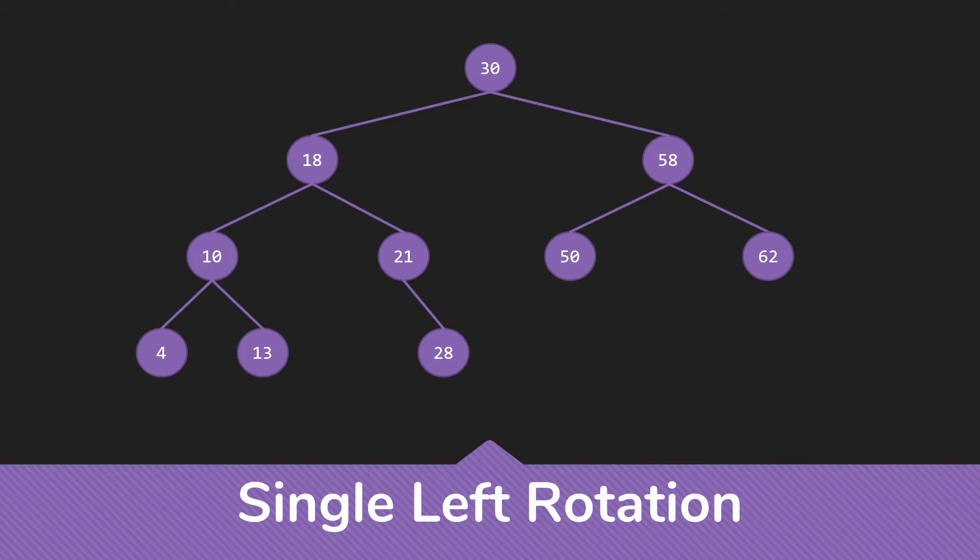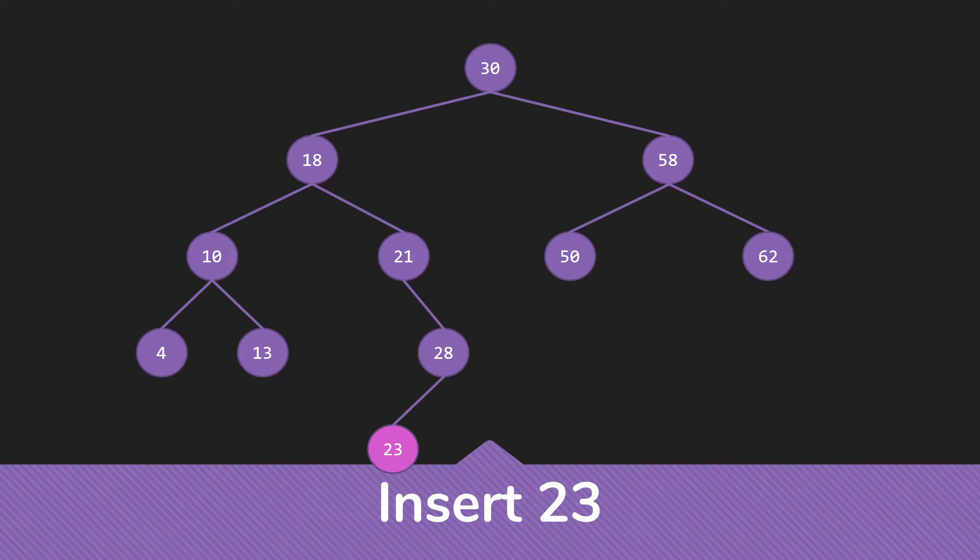Let's look at a different example and insert 23. So after we insert the 23, we need to check those balance factors. The leaf is fine, of course. Its parent is fine. But at the 21, we have a problem.